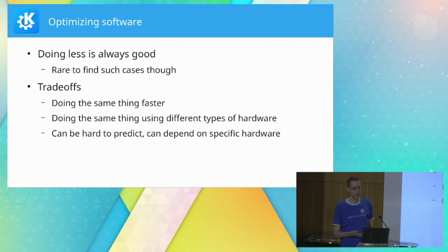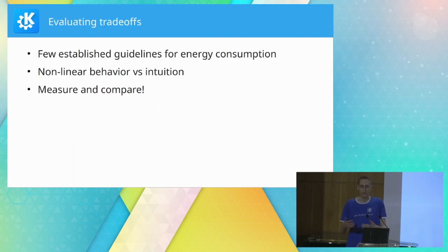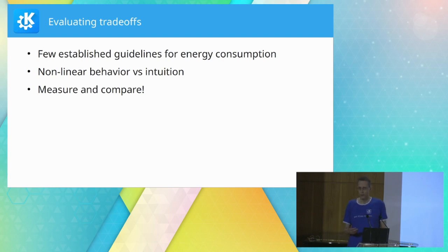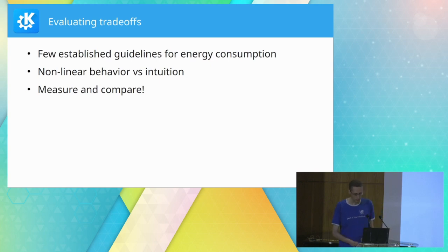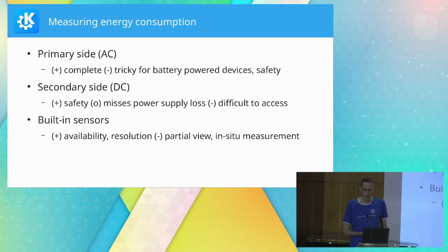We need a way to qualify those trade-offs. This is complicated because the answer can depend heavily on specific hardware. If we're optimizing for speed we measure time. If we're optimizing for energy, we actually need to measure energy use — that is the only viable approach. A lot of this doesn't behave linearly, so don't trust your intuition. Measure this, then decide which option is better.